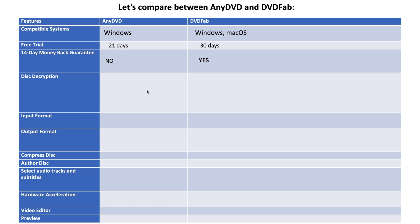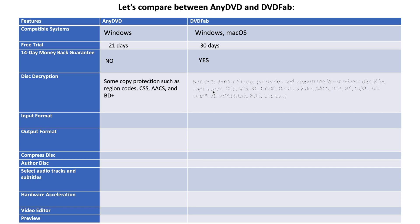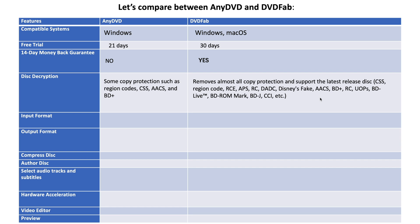For decryption, AnyDVD only supports some copy protections such as region codes, CSS, AACS, and BD+. For DVDFab, it removes all copy protections and supports the latest release discs — for example, CSS, region code, RCE, APS, CR, DA, DC, Disney's fake, AACS, and so on.